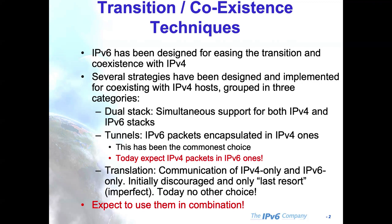We have three main ways of doing transition and coexistence. The first is dual stack, the second is tunneling, and the third is translation. Originally we expected to use one or the other, but today we need to use some of them in combination. We are not just running dual stack but also applying different technologies in different parts of the network.